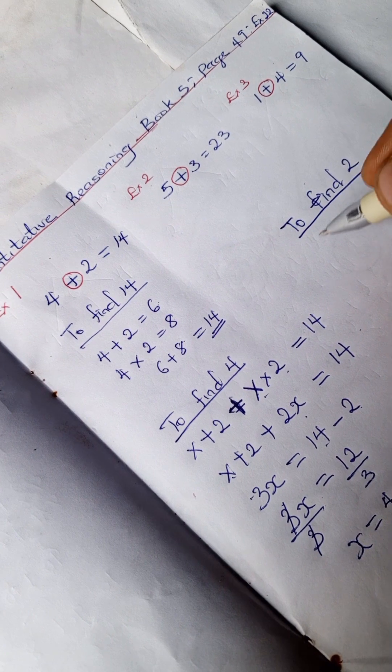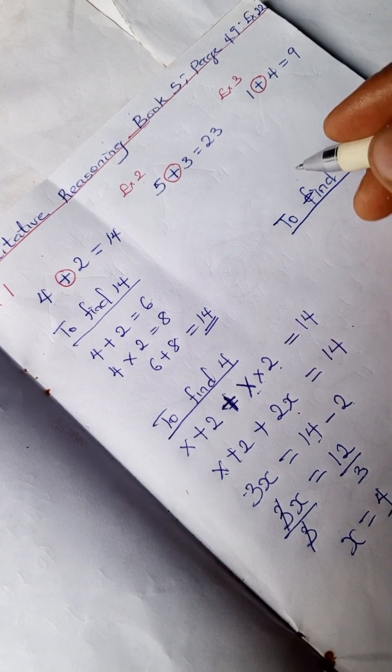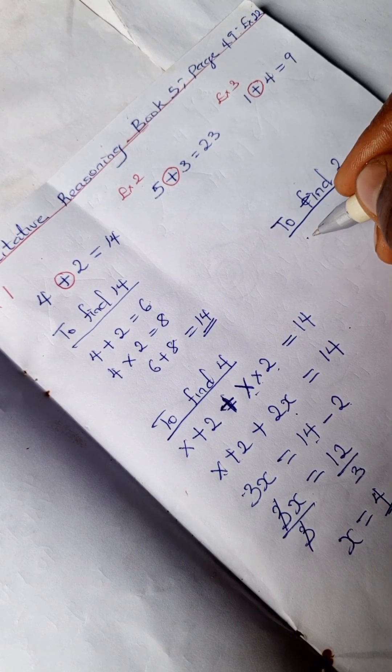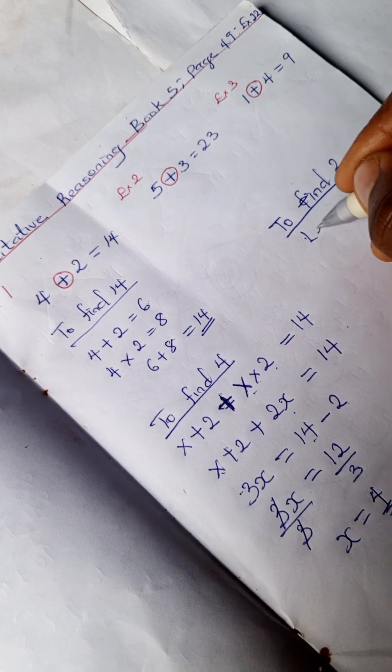To find 2, we're going to adopt the same pattern here. Since we're looking for 2, we're going to assume that our 2 is y. Let 2 be y.